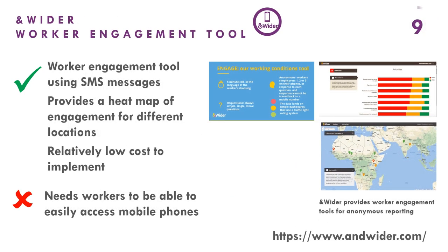Anwider is a company that provides worker engagement through SMS text messages. This can provide a heat map of engagement for different locations and is relatively low cost to implement. Workers receive simple questions via text messages in their own language that they can quickly answer. They receive them at different times of the day, helping preserve anonymity. However, this method does require workers to be able to access a mobile phone and have a phone signal.